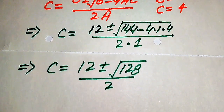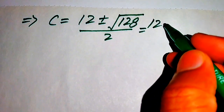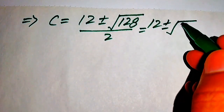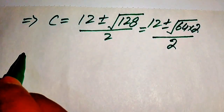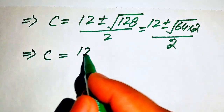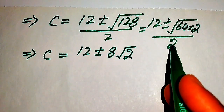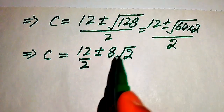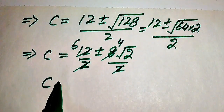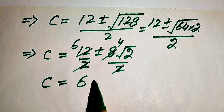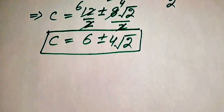We simplify inside the square root: 128 can be written as 64 times 2. Since √64 equals 8, we get 8√2. Breaking the fraction: 12 divided by 2 equals 6, and 8 divided by 2 equals 4. Therefore C equals 6 plus or minus 4√2. These are the two roots of the given equation.